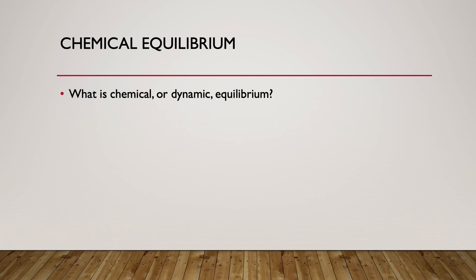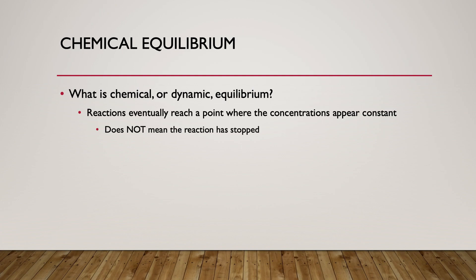A couple things from a background standpoint for those of you that haven't gotten too far into this yet in lecture. Chemical equilibrium, sometimes called dynamic equilibrium, is really just this point where if a reaction goes on long enough, its concentrations eventually equilibrate to where they're not changing anymore — those concentrations basically become constant.